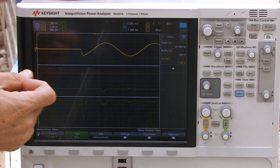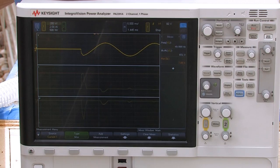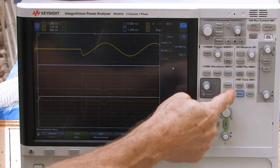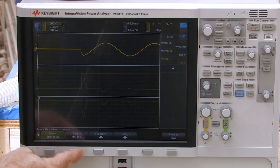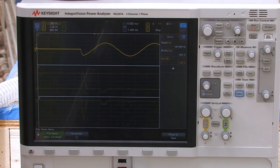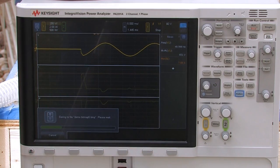So I want to use this screenshot to document the inrush measurement that I just made. So I can just go over to the file save key. We'll go ahead and save. We're going to save to the USB. Let me just check and make sure we have a unique file name, which we do. So I'll go ahead and press save and now we're saving to the USB stick.